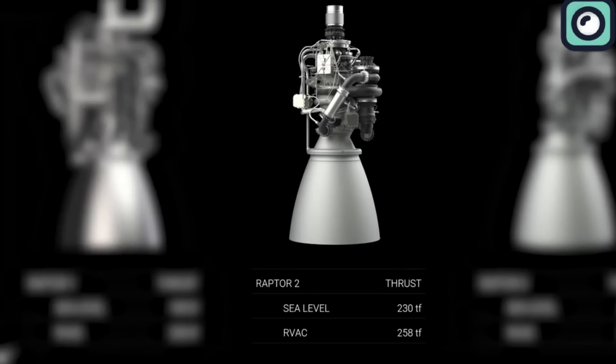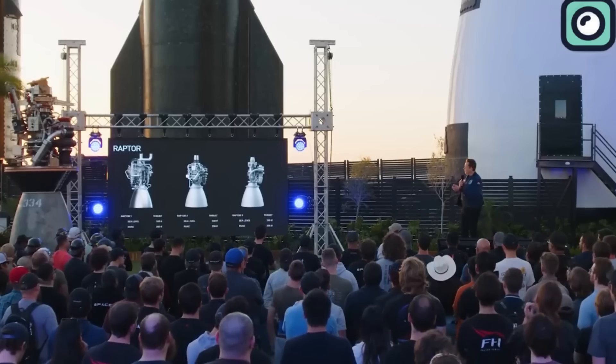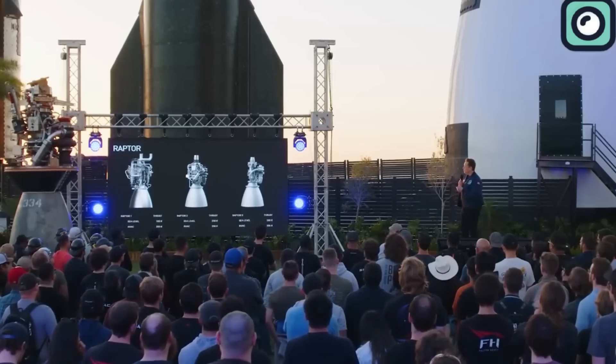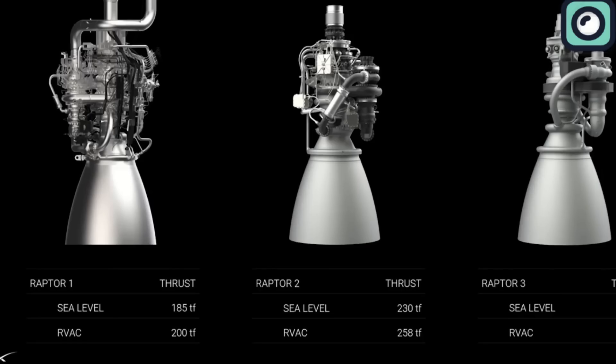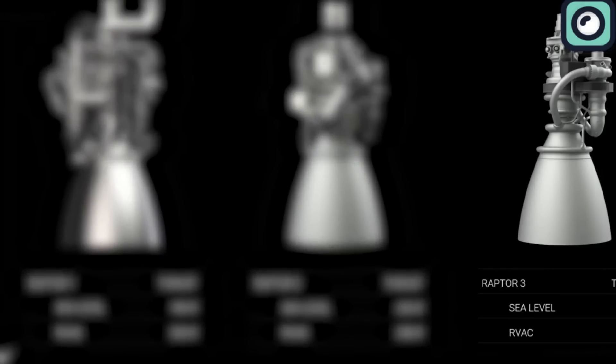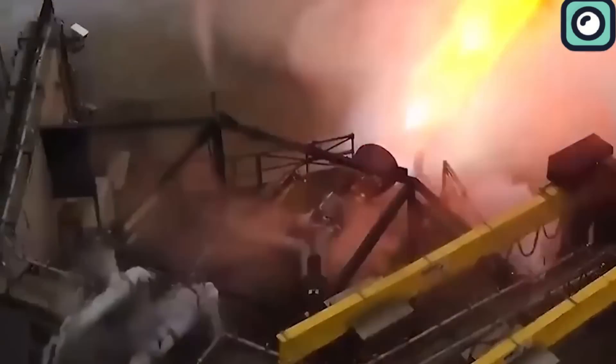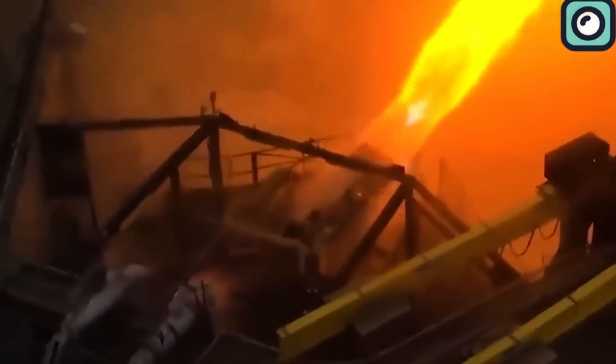This latest version of the engine incorporates advanced 3D metal printing technology, which allowed SpaceX to streamline production by integrating components and reducing the need for complex assembly. This innovation speeds up manufacturing, lowers costs, and brings SpaceX closer to its goal of rapid launch and reuse.